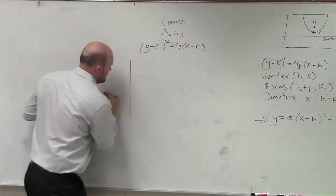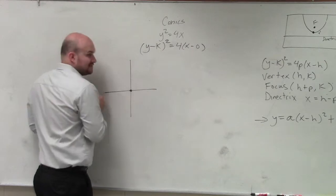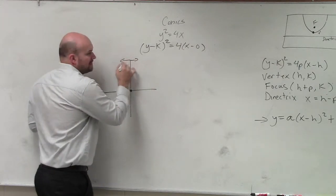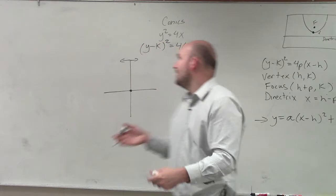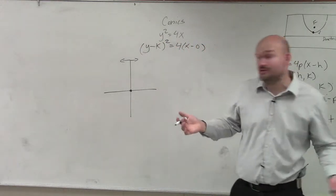So we know the graph crosses at 0, 0, the origin. And it has to open left or right. Now, we already know the answers because we already graphed this. But let's pretend you're doing a problem where you don't know what the answer is.